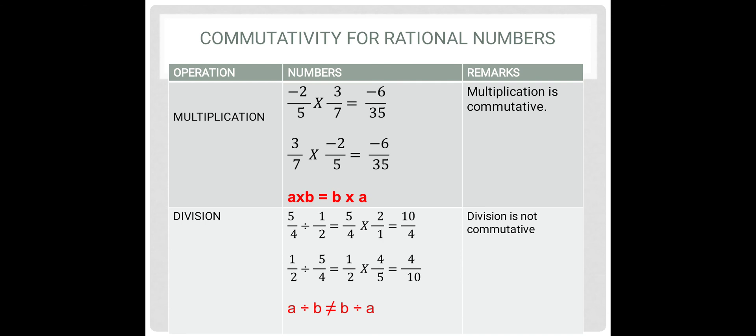Today we have learnt the commutative property for whole numbers, natural numbers, integers, and rational numbers. We have understood that commutativity checks whether the order of the numbers in the operation is important or not.